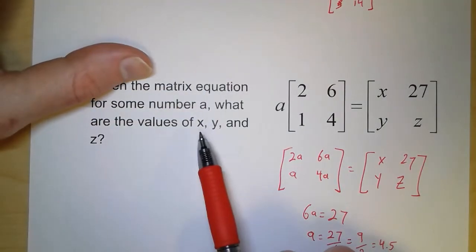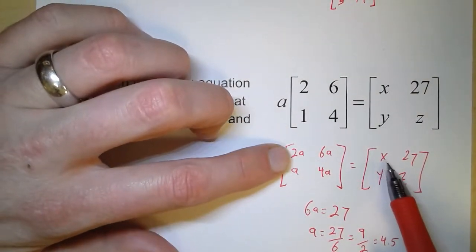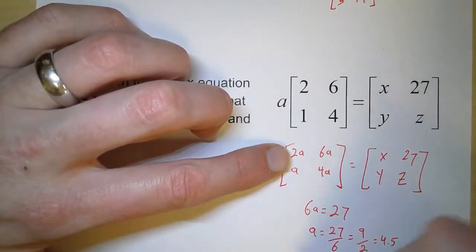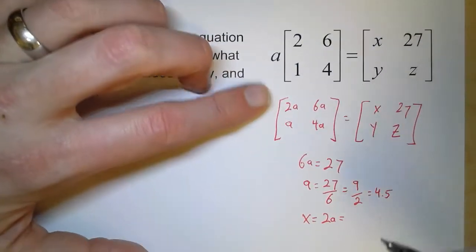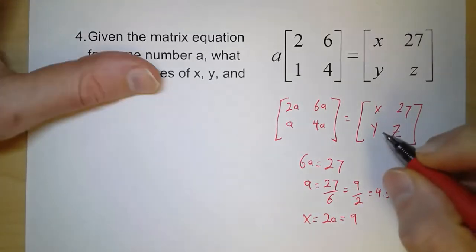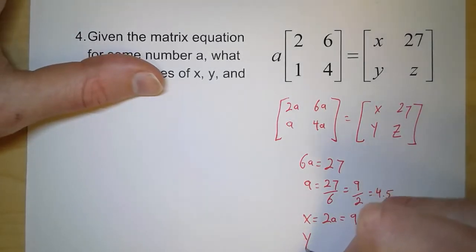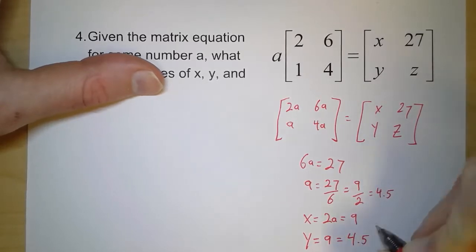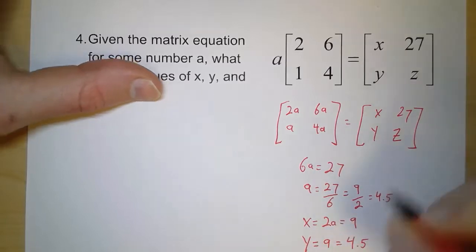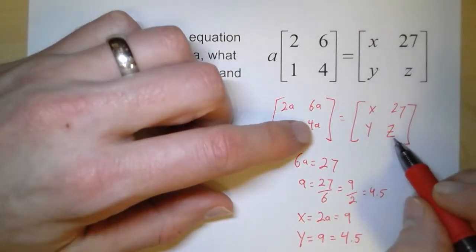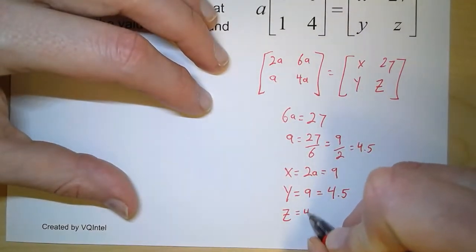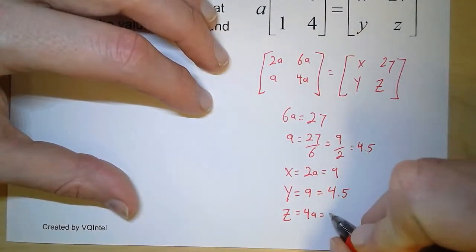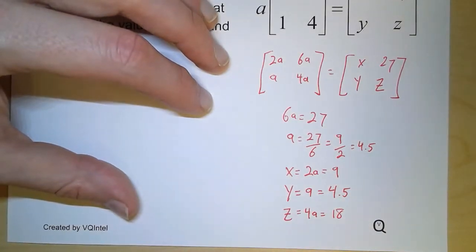And so if we want the value for x, well, x is just 2 times whatever A is. So x is 2A, and since A is 4.5, that means x has to be 9. Now, y is just equal to whatever A is. So that means y equals 4.5. And z, well, z just equals 4A. So that means, since it's equal to 4A, we just multiply 4.5 times 4, and that gives us 18.